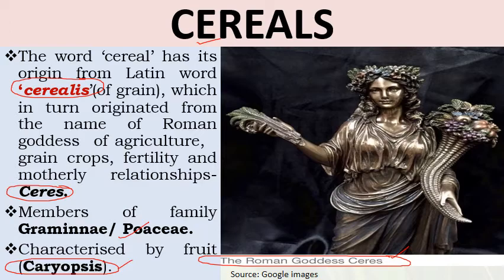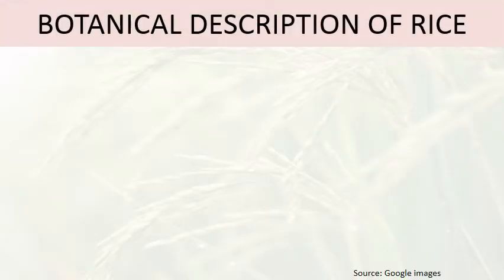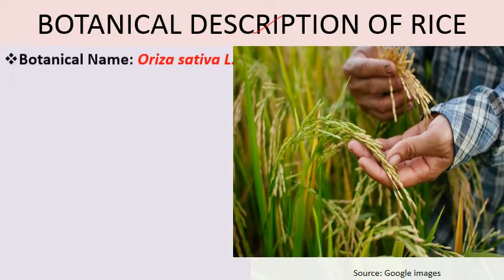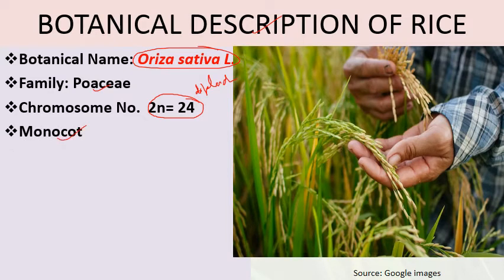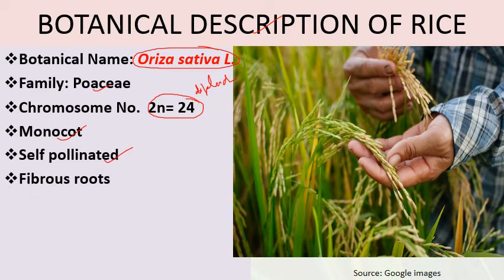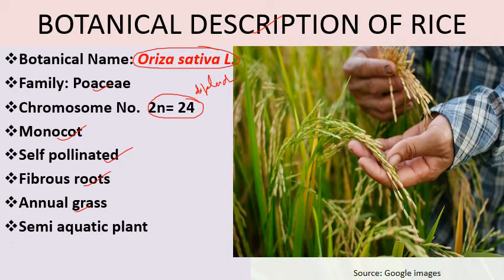These are characteristic features common to both wheat and rice. The botanical name of rice is Oryza sativa, the family is Poaceae, and the diploid chromosome number is 24. Rice is a monocot plant with a single cotyledon present. It is a self-pollinated plant with a fibrous root system. It is mostly an annual grass, completing its life cycle within a year or one season, and it is a semi-aquatic plant requiring a lot of water for growth.